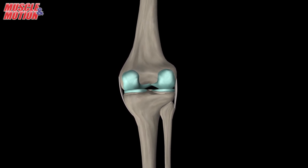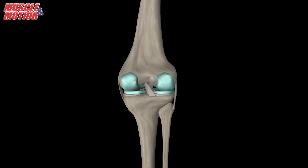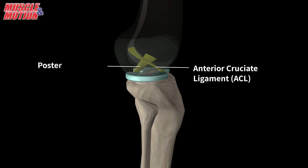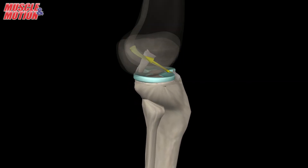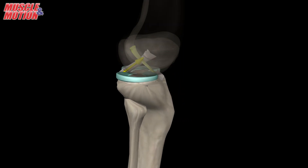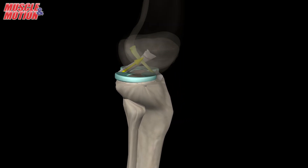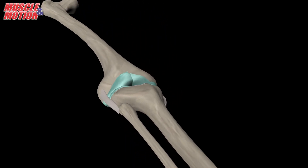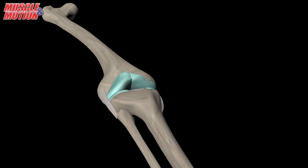Inside the knee joint there are two other important ligaments that stretch between the femur and the tibia. These are the anterior cruciate ligament, ACL, at the front, and the posterior cruciate ligament, PCL, at the back. The ACL keeps the tibia from sliding too far forward in relation to the femur, and the PCL keeps the tibia from sliding too far backward in relation to the femur. Together, the ACL and PCL control the back-and-forth motion of the knee.